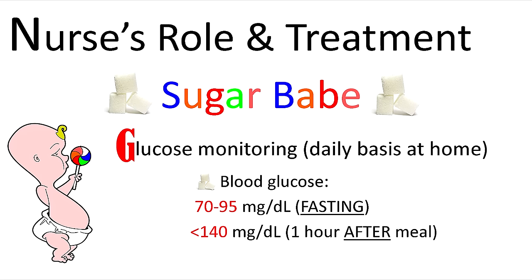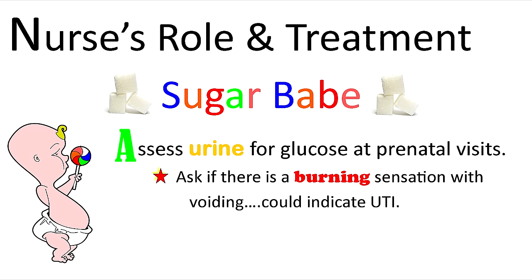A is for assessing urine for glucose at the prenatal visits. Glucose starts to leak into the urine because there's too much in the blood. You'd also want to ask her if there's any burning sensation with voiding — this could be a red flag for urinary tract infection, and you would want to get a doctor's order and have her urine sent for urinalysis to make sure she does not have an infection.